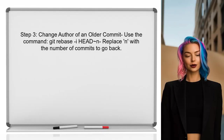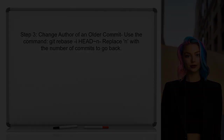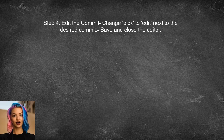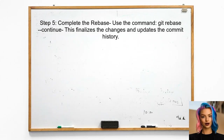If you need to change the author of an older commit, you can use an interactive rebase. This is done by running git rebase -i HEAD~n, where n is the number of commits to go back. During the interactive rebase, you will see a list of commits. Change pick to edit next to the commit you want to modify. After saving and closing the editor, amend the commit author as before. Finally, continue the rebase process by running git rebase --continue. This will apply the changes and update the commit history.